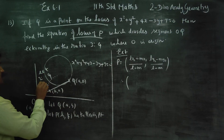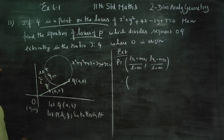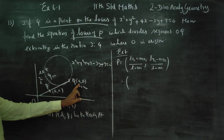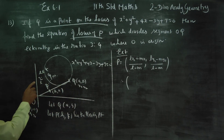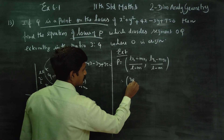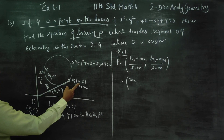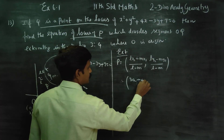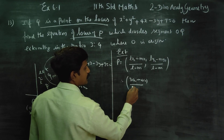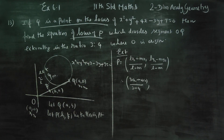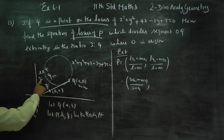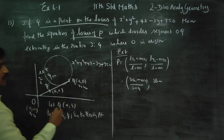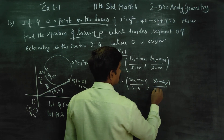L is 3, m is 4. x1, y1 is O which is (0, 0). x2, y2 is Q which is (a, b). So substituting: lx2 is 3 into a, mx1 is 4 into 0, by l minus m which is 3 minus 4. Similarly, ly2 is 3 into b, my1 is 4 into 0, by 3 minus 4.